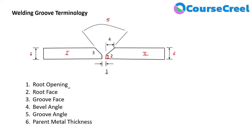Term three is groove face — this face is the groove face. Term four is bevel angle — this particular angle is the bevel angle. Term five is groove angle — this complete angle is represented as the groove angle. And term six is parent metal thickness — this complete thickness of the metal represents the parent metal thickness. So the six terms are: root opening, root face, groove face, bevel angle, groove angle, and parent metal thickness.